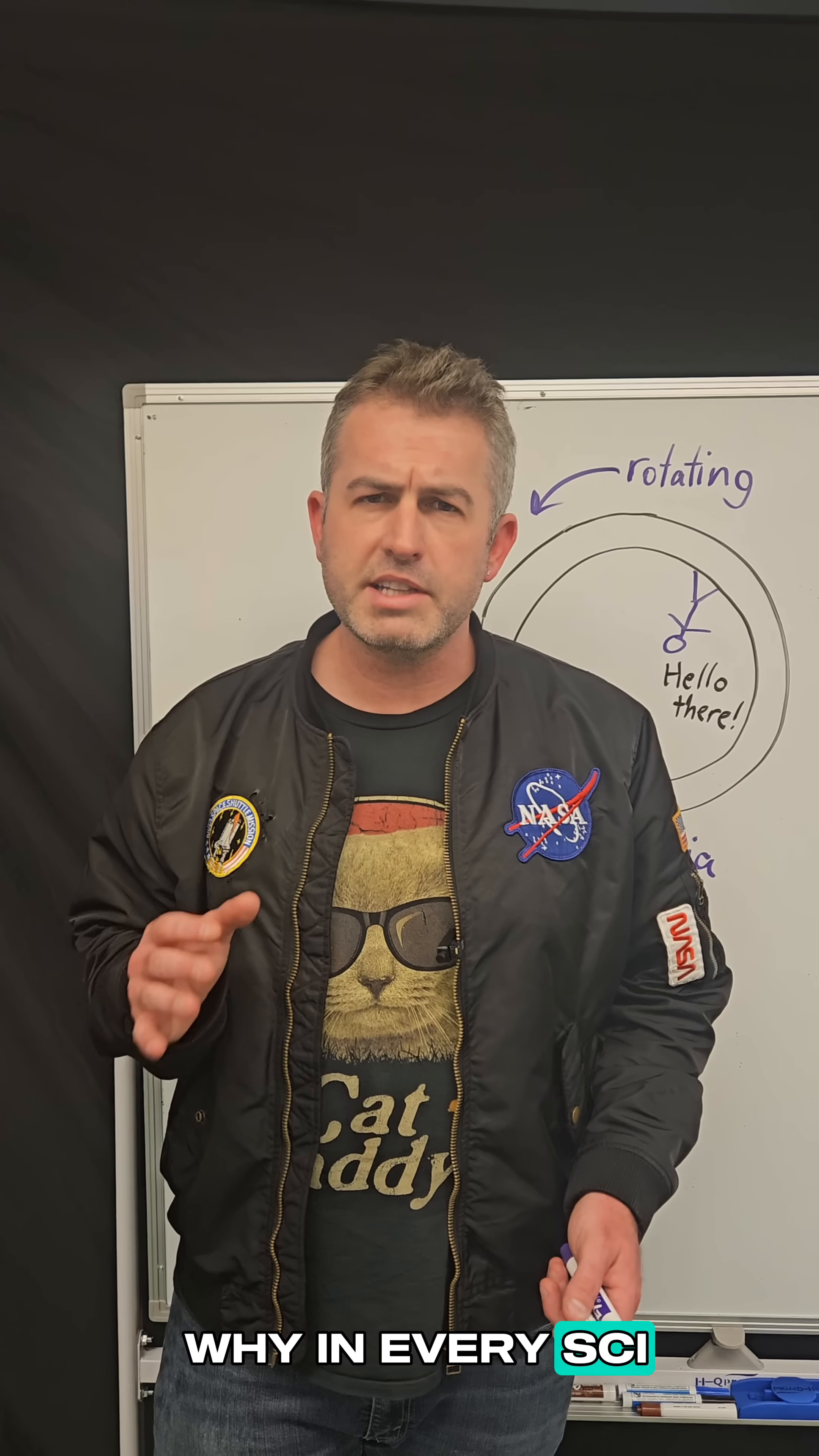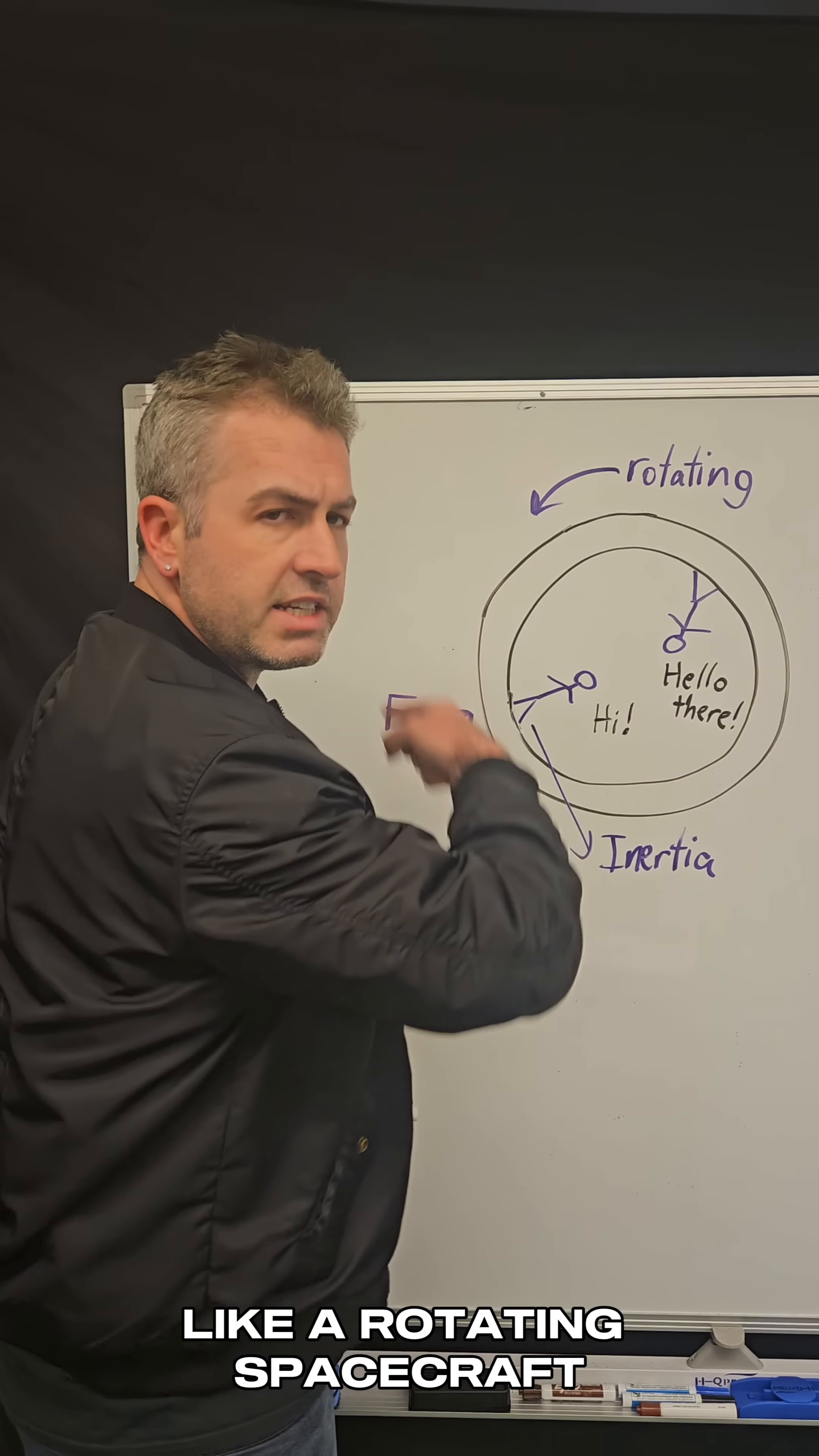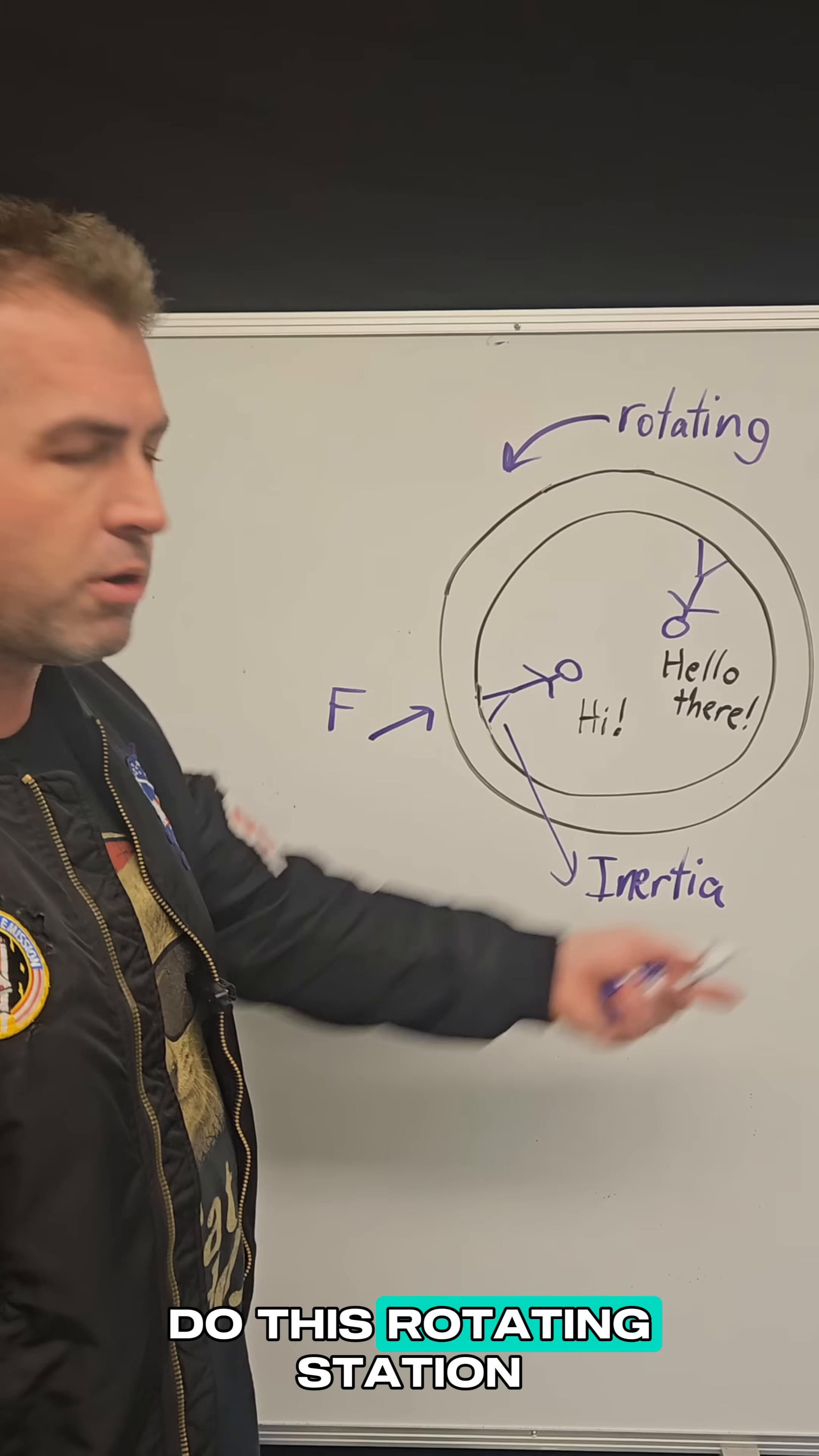Have you ever wondered why in every sci-fi movie, astronauts who are traveling through space are always moving in some kind of rotating spacecraft? Why don't they just go on a ship and go straight without spinning all the time? So why do they do this rotating station?